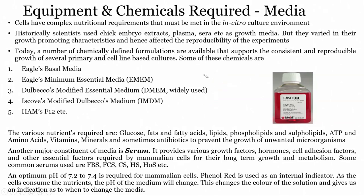What are the various nutrients provided by media? Nutrition includes glucose, fats, fatty acids, lipids, phospholipids, sulphophospholipids, as well as ATP and amino acids — it can be vitamins, minerals, and also sometimes antibiotics to prevent the growth of unwanted microorganisms. All these nutrients combined are present in the media, and that is why cells can sustain for a longer period of time. Another major constituent of media is serum.